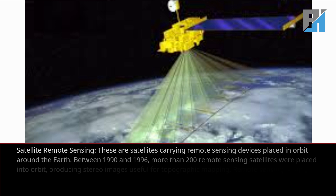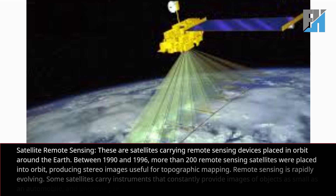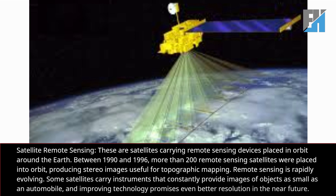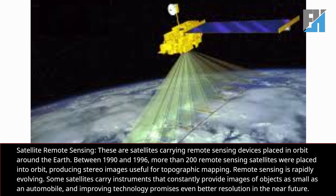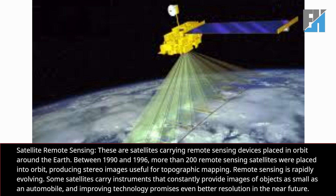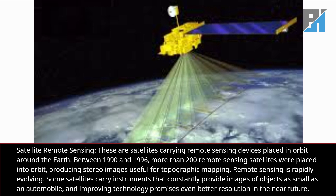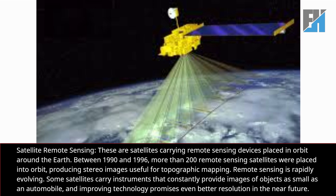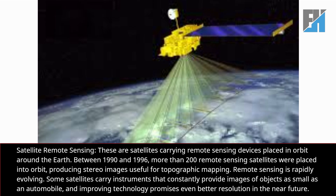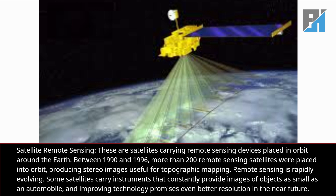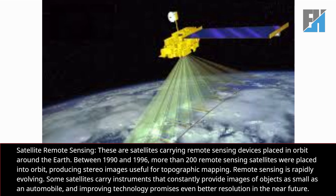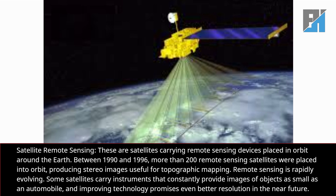Satellite remote sensing refers to satellites carrying remote sensing devices placed in orbit around the earth. Between 1990 and 1996, more than 200 remote sensing satellites were placed into orbit, producing stereo images useful for topographic mapping. Remote sensing is rapidly evolving; some satellites carry instruments that constantly provide images of objects as small as an automobile, and improving technology promises even better resolution in the near future.